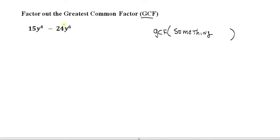15 and 24, what's the greatest common factor of 15 and 24? In other words, what's the biggest number that can divide into both? Now most of the time you'll be able to just look at this and tell. You can probably look at this and say, well, it's going to be three.